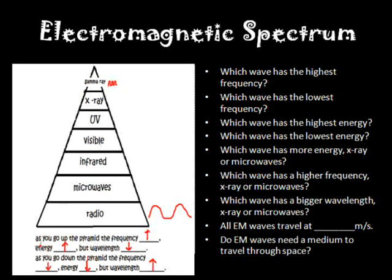Here's how the pyramid works. As you go up the pyramid, the frequency and the energy increase, but the wavelengths decrease. As you go down the pyramid, the frequency decreases, the energy of the waves decrease, but the wavelengths increase.